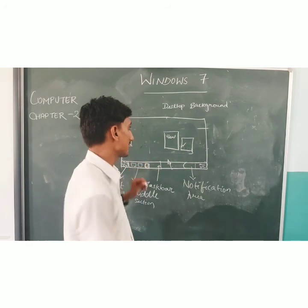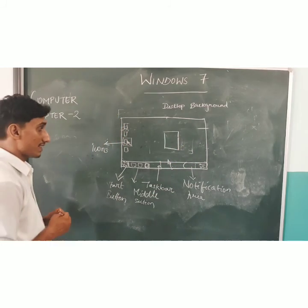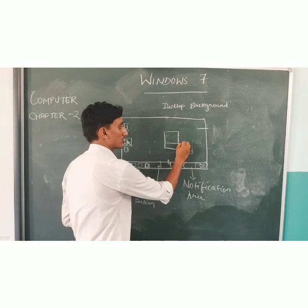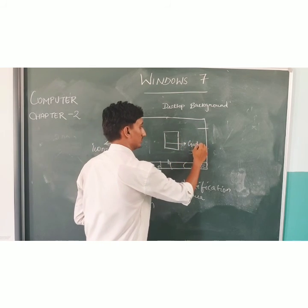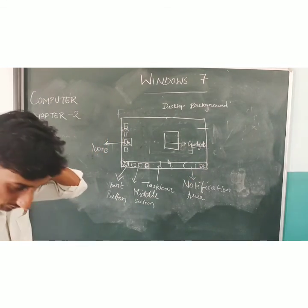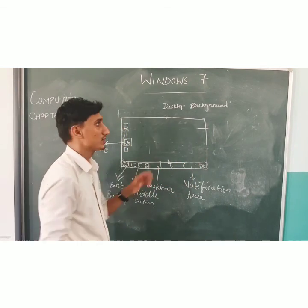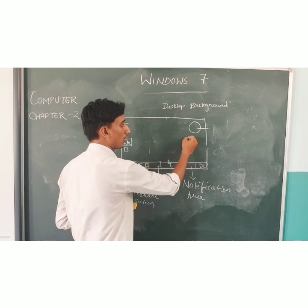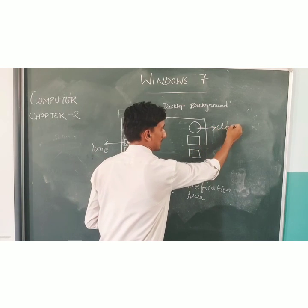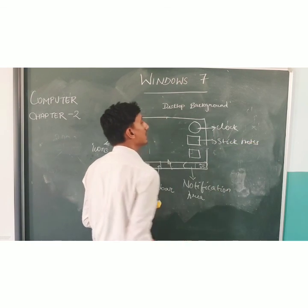By right-clicking the desktop, you can also see an option for gadgets. In Windows 7, you can see different types of gadgets. From the gadgets menu, you can select items such as a clock and sticky notes.